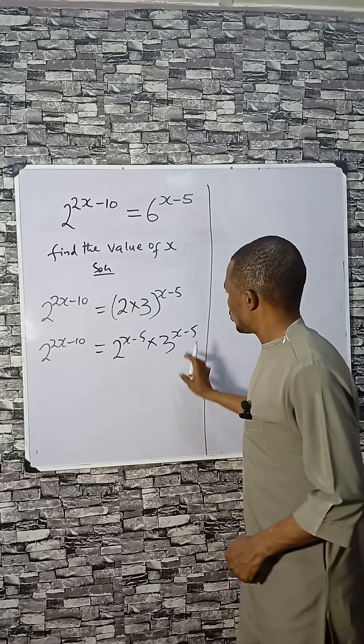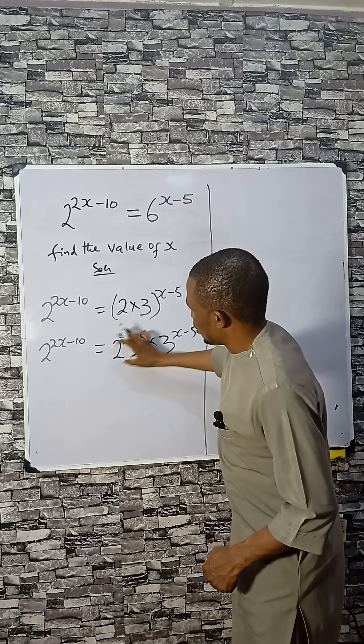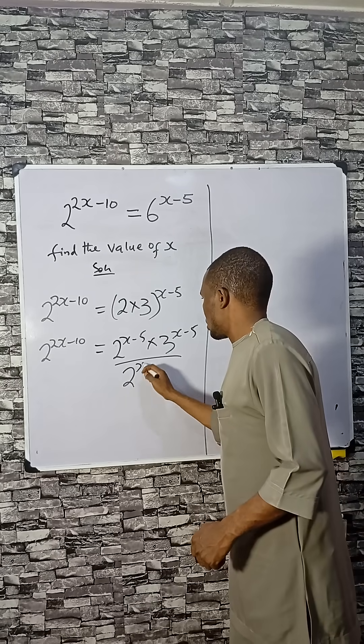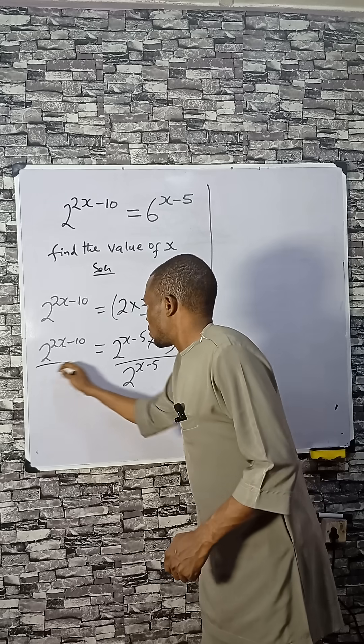To make sure that base 2 goes to one side, we divide all through by 2 raised to the power x minus 5.